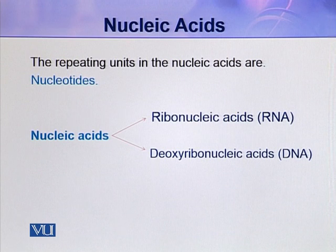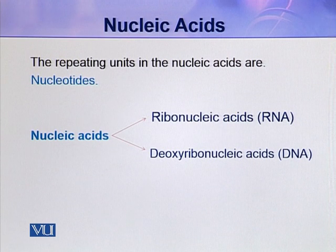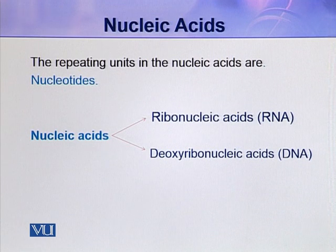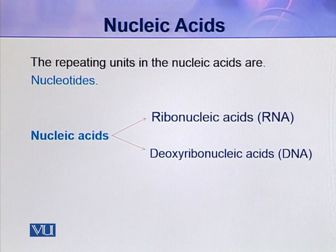Deoxyribonucleic acid, DNA, is only of one type — there are no other types of DNA. DNA is mainly present in the nucleus, in addition to the chloroplast and mitochondria.